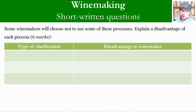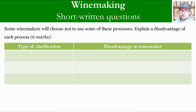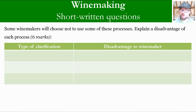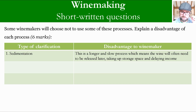Now for the next part of the question: winemakers will sometimes choose not to use some of these processes. Explain a disadvantage of each process. You won't get a mark for naming the clarification again — the marks here are only six, so two marks for each disadvantage. Why would a winemaker not use each process? Let's start with sedimentation.